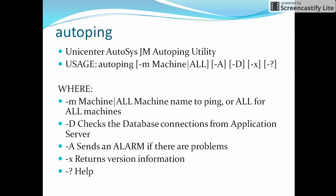The auto ping command, along with option hyphen name, requires the machine name. Or if you want to ping all the machines which are installed on an AutoSys server, you give the option 'all'. Along with that, we can use two more options: hyphen a and hyphen d. Hyphen a is used to send an alarm if the auto ping command is not successful — it will send an alarm. Hyphen d will check the communication with the database and the application server.